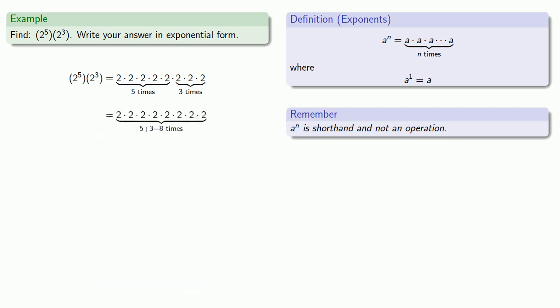And so when I multiply them all together, what I have is 5 plus 3, 8 copies of 2. And since I want to write the answer in exponential form, I can write this as 2 to power 8.